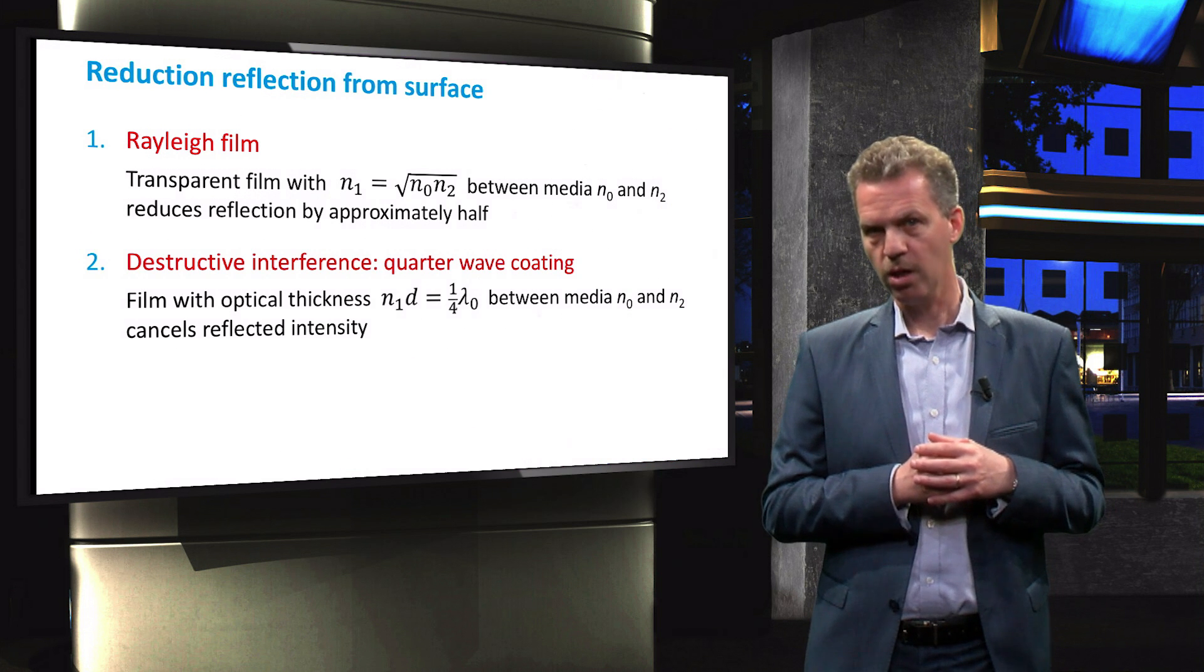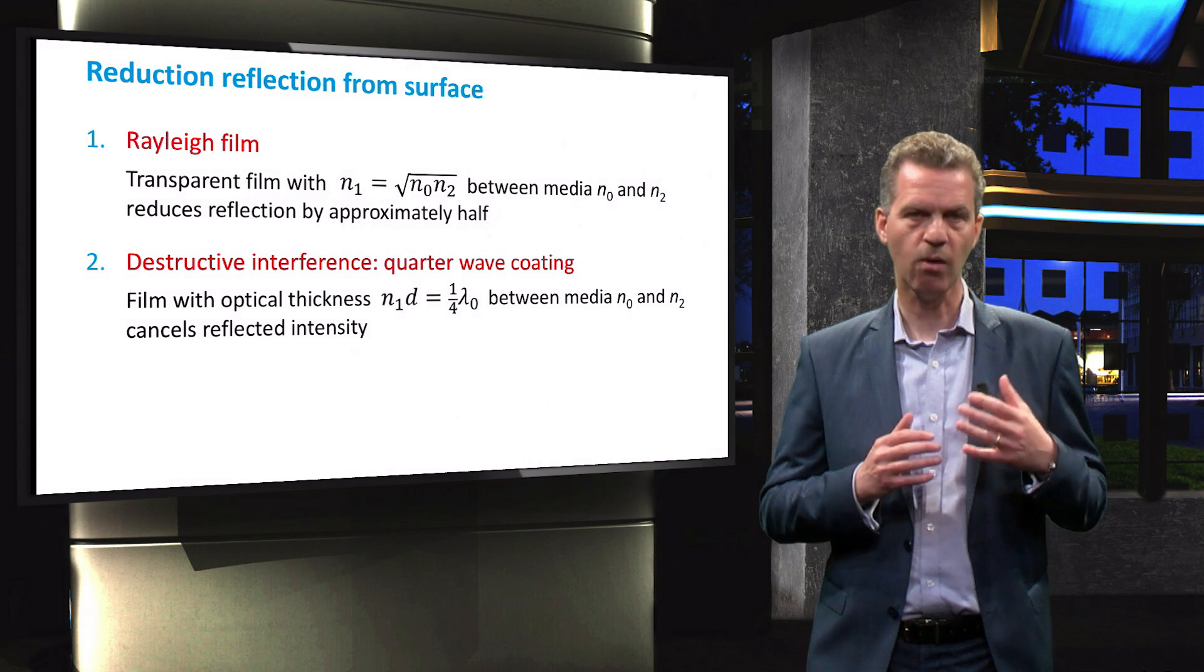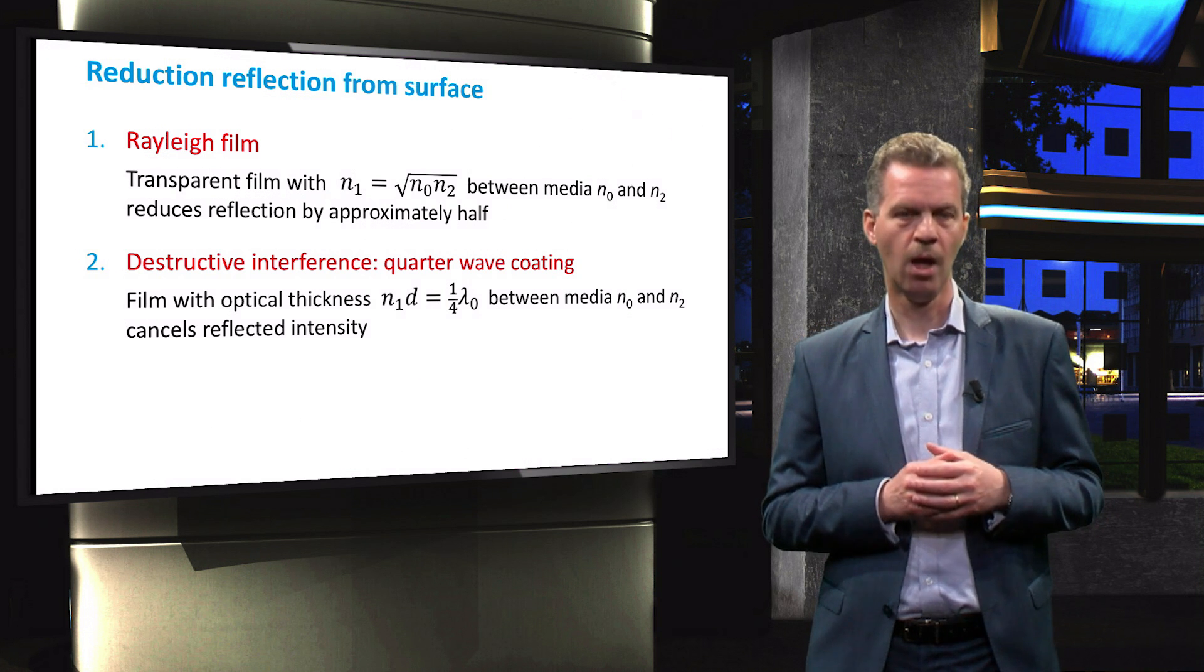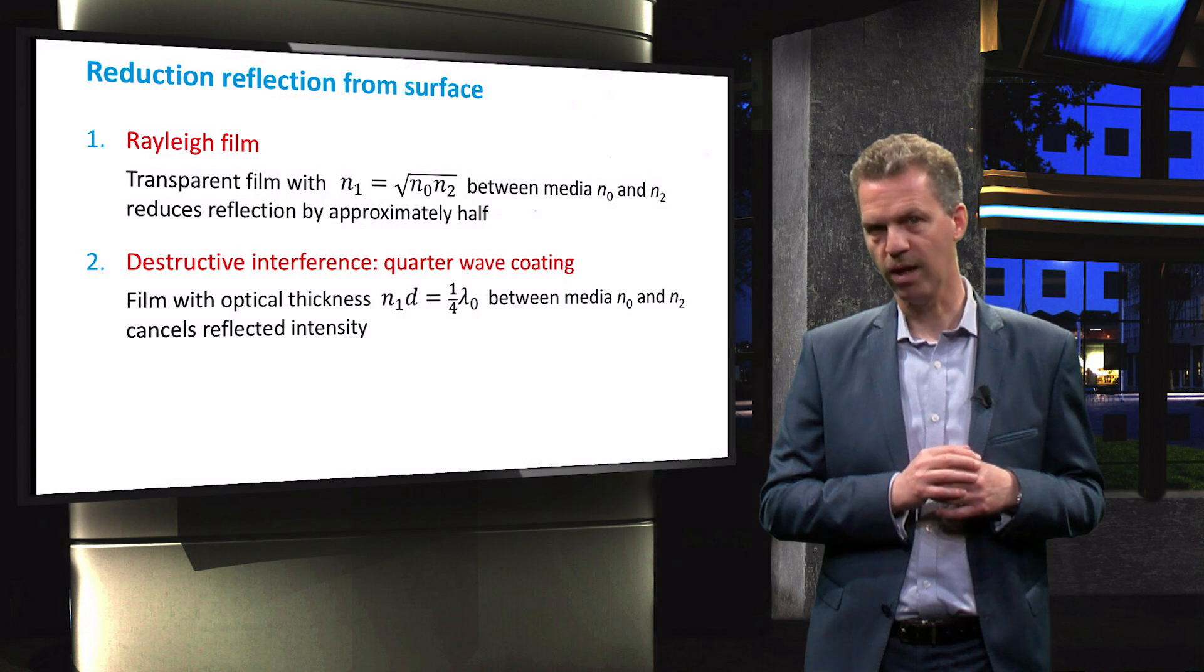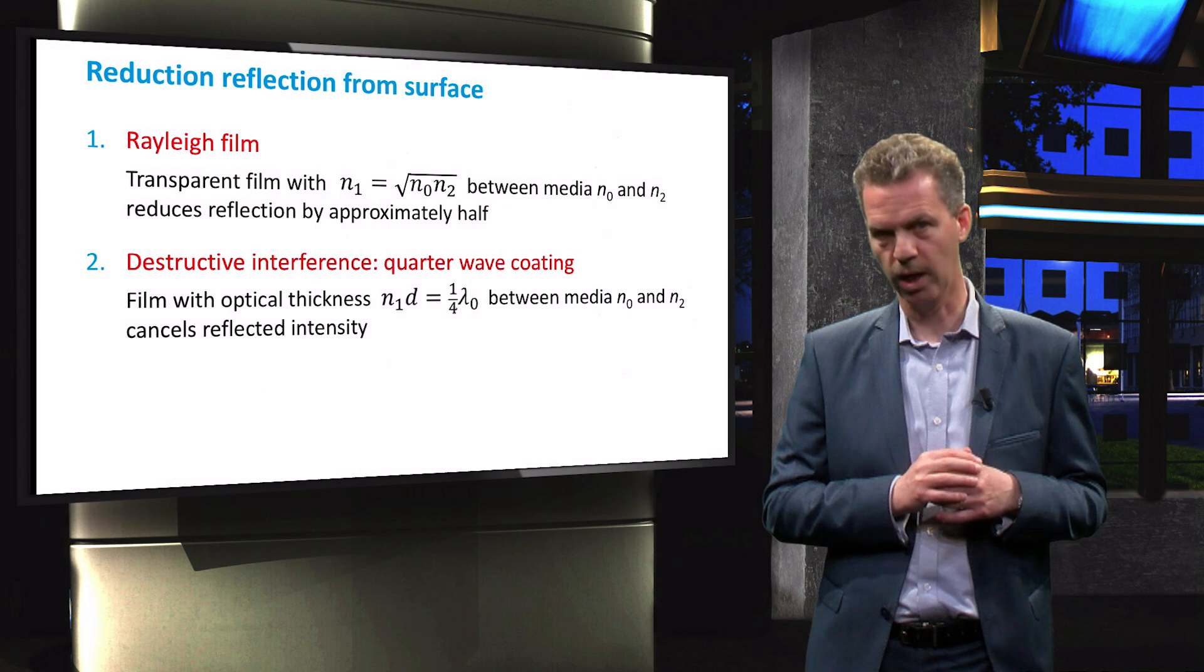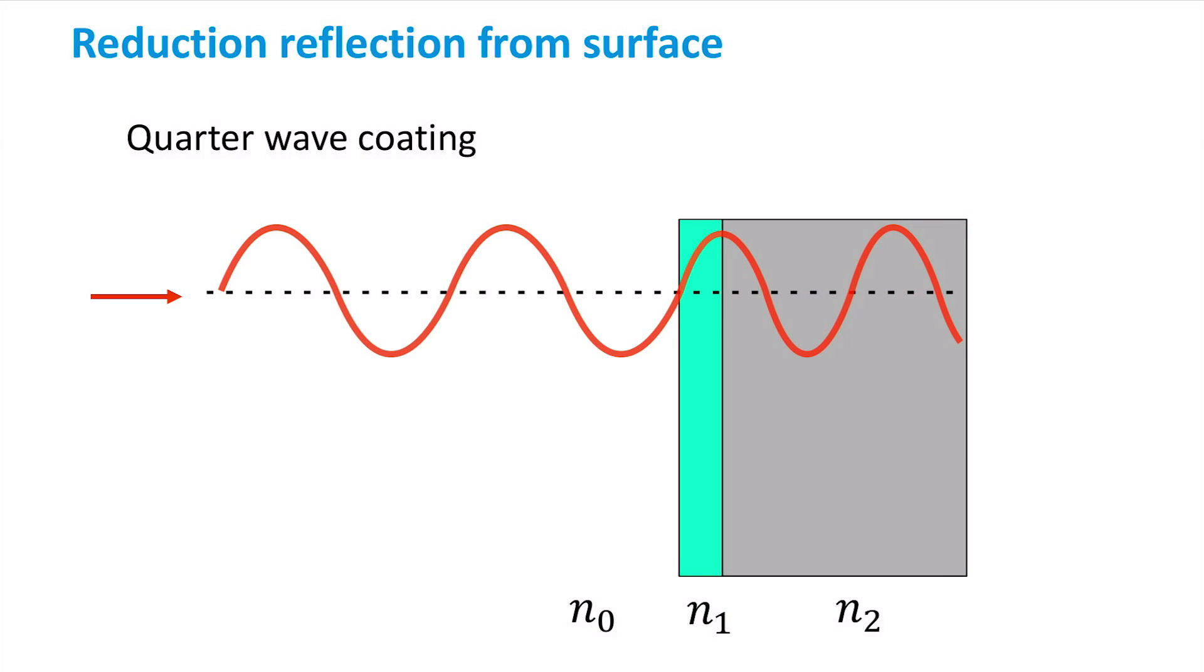We can reduce the reflection further of this anti-reflective coating by using the concept of destructive interference. Tuning the thickness of the Rayleigh film will result in the minimization of reflection in the chosen wavelength range. If we consider light that is incident on the silicon wafer coated with the Rayleigh film, the wave will not only reflect at the interface between air and anti-reflective coating, it will also reflect at the interface between the anti-reflective coating and silicon wafer.